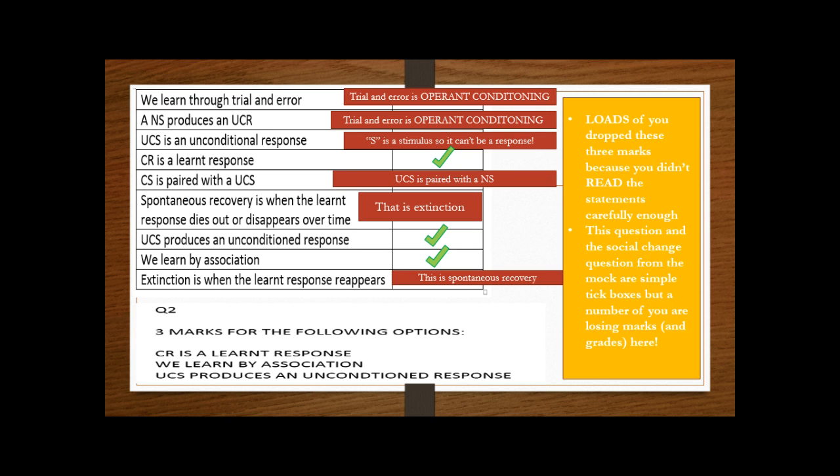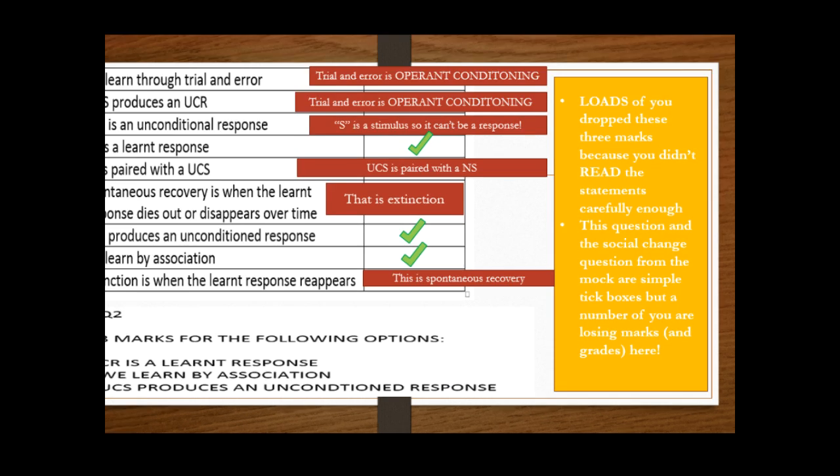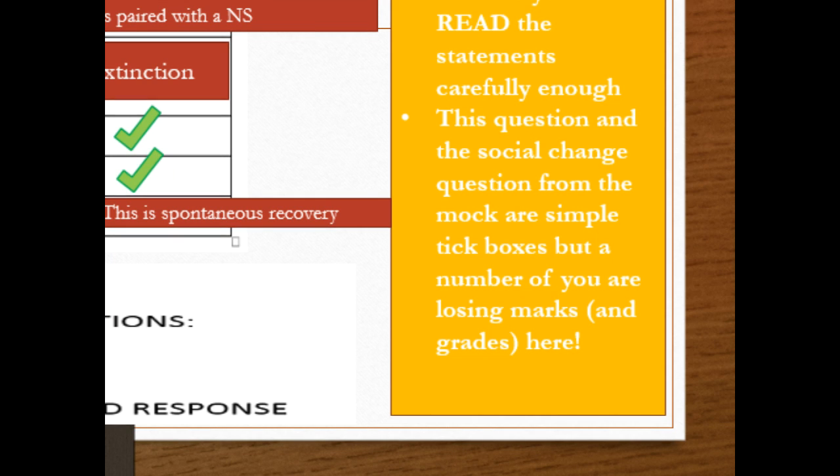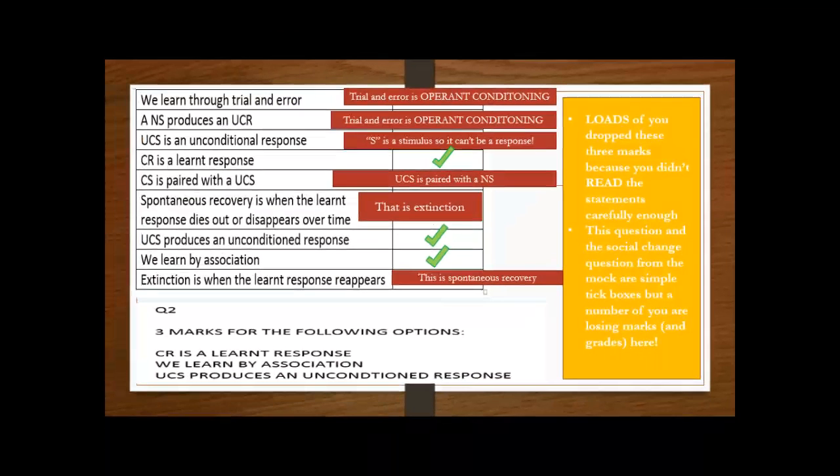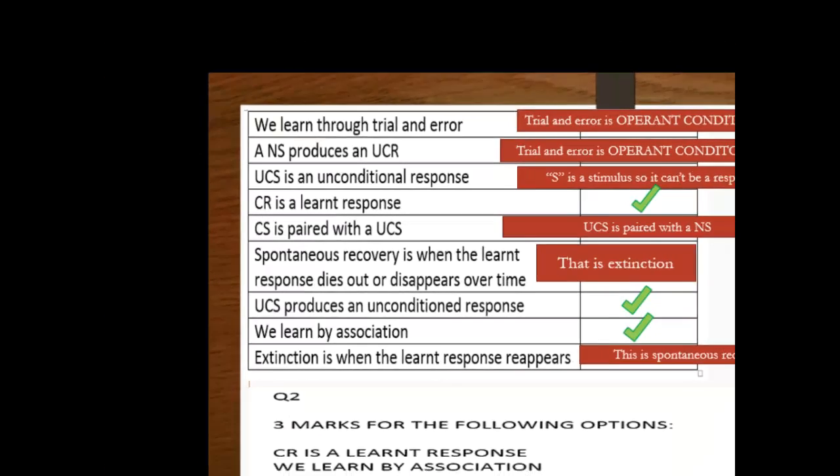Moving on to the next question, really, really disappointing. This question and the social change question from the mock, which was the previous assessment, were tick box style. Now the tick box style questions are supposed to be your easy marks, but a lot of you are just losing these three marks, which is a grade, because you're just not reading the statements carefully. So the ones that were getting you any credit were: CR is a learnt response because it stands for conditioned response—conditioned means learnt. It is obviously a response. We go through conditioning, that's what's happening to us, we're learning something. We learn to do that by association, and a UCS, an unconditioned stimulus, produces an unconditioned response.